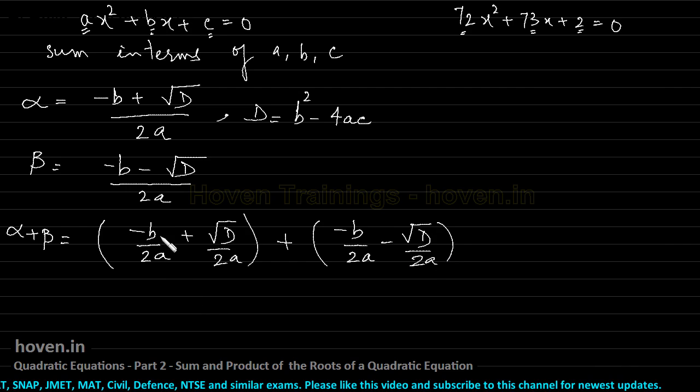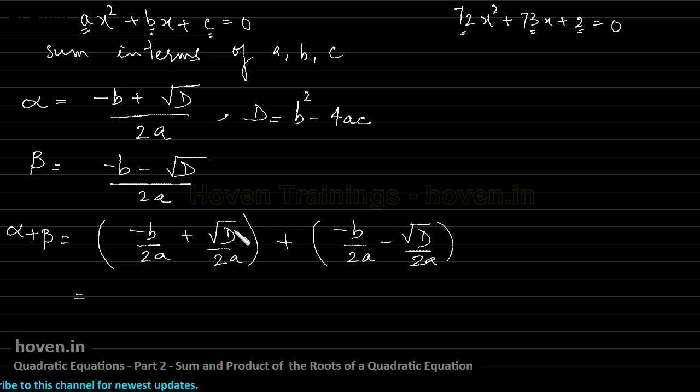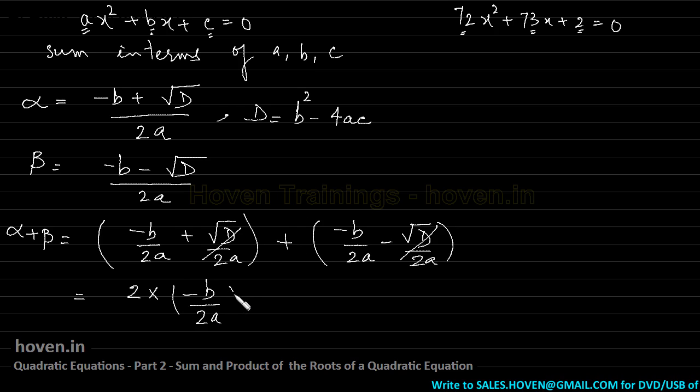What I have done is I have split this b plus square root of d into two parts, I have brought 2a below b and 2a below square root of d. I have done the same thing for beta also, brought this and brought this. Now we can observe that square root of d by 2a and minus square root of d by 2a can be cancelled out plus and minus. Whereas these two are same quantities being added twice.